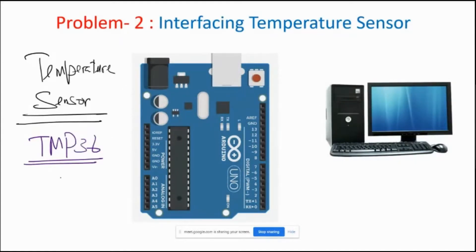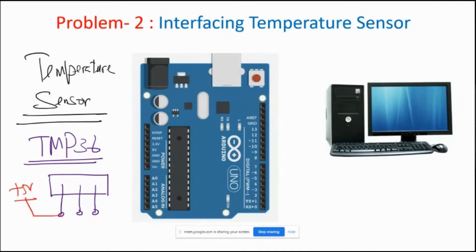The TMP36 temperature sensor has three terminals: power input, output, and ground. The first pin is the power supply line where I connect plus 5 volts. The last pin is the ground line. The central pin is the signal line, which I connect to analog 0 or any analog pin.